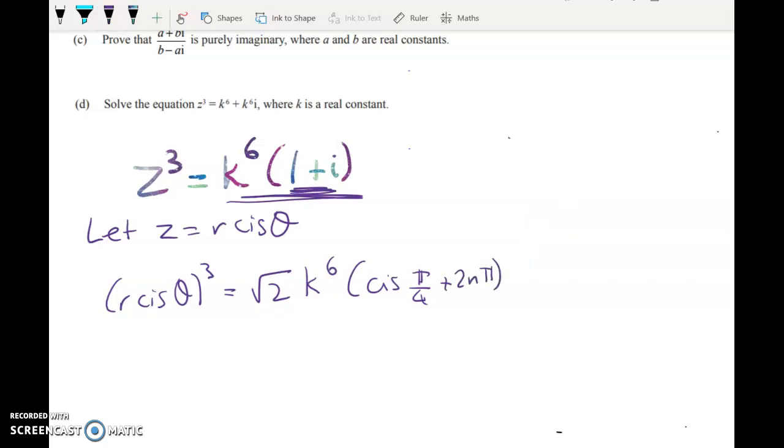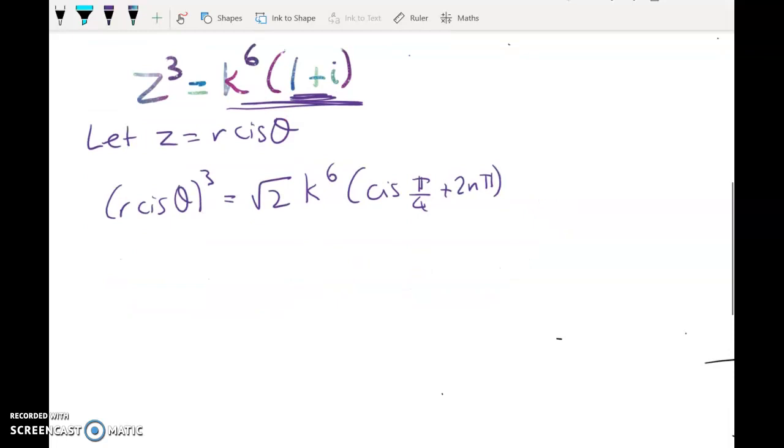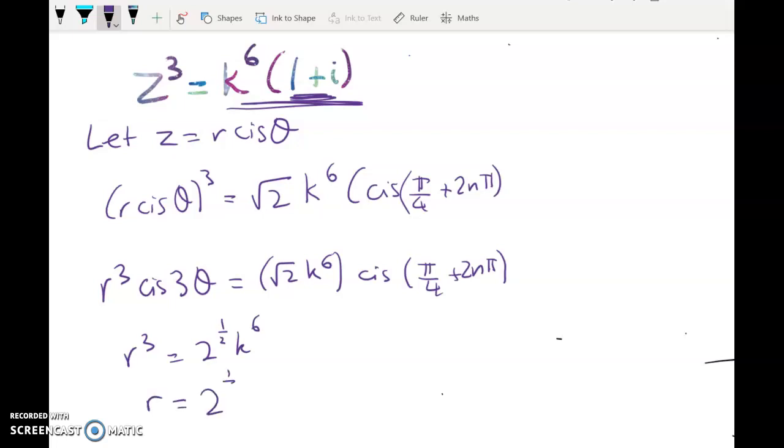And if you're finding that hard, there's a bunch of earlier videos going through how to use De Moivre's theorem to find roots of equations. So now we've got r cubed cis 3 theta is equal to root 2 k to the power of 6 times cis of this. So r cubed is equal to 2 to the power of 1/2 k to the power of 6. That gives me r is equal to 2 to the power of 1/6 times k squared. So that's that first bit done.